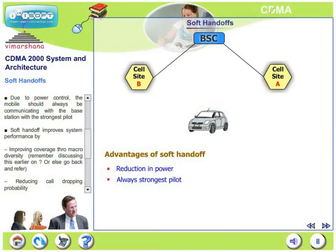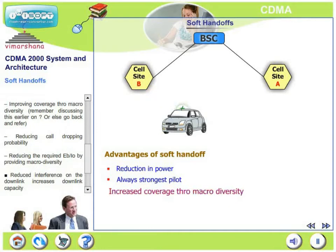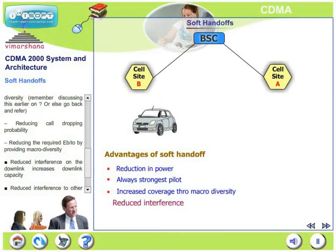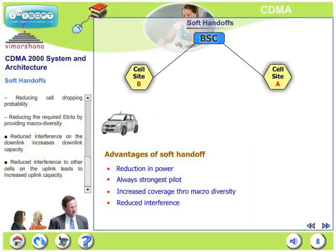Soft handoff improves system performance by improving coverage through what is known as macro diversity — we discussed this while talking about rake receivers. Soft handoff also improves system performance by reducing call dropping probability and reducing the required Eb/I0 by providing macro diversity. It will be interesting to know that soft handoff improves overall system capacity both in the downlink and in the uplink.